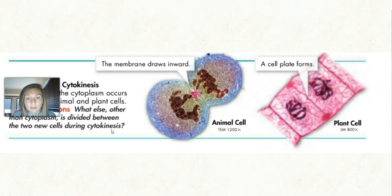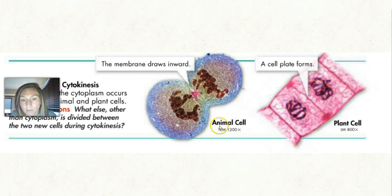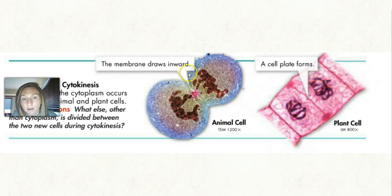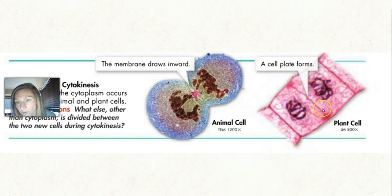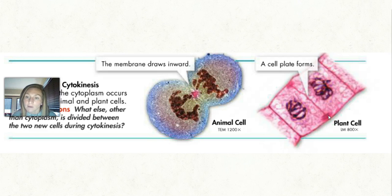That brings us to cytokinesis, the last phase of cell division. I have an actual picture through an electron microscope of an animal cell going through cytokinesis — you can see the membrane is being drawn inward to pinch those cells apart. This area where it's starting to pinch is also known as the cleavage furrow. With a plant cell, shown underneath the light microscope, it's a little different — it doesn't split into two separate cells. A cell plate will form down the middle so that the cell wall and cell membrane can form again. Plant cells stay together because that's what helps them form their rigid structure, so they won't actually separate like an animal cell will.